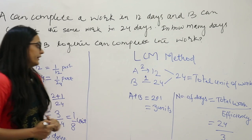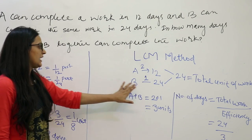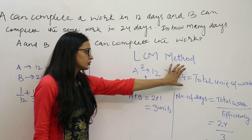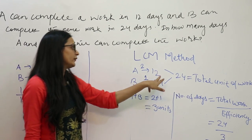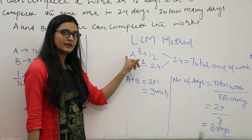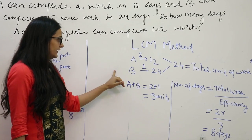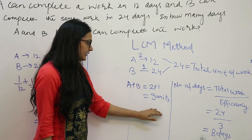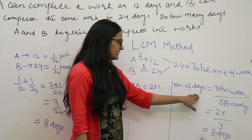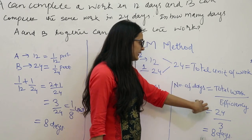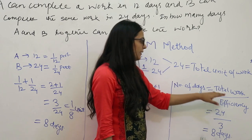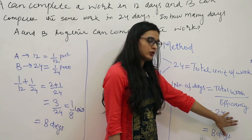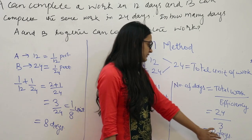I repeat the question. A किसी काम को 12 दिन में करता है, B उसी काम को 24 दिन में करता है. हमने दोनों का LCM लिया जो हमारा total unit of work को denote कर रहा है. अब हमने 24 को 12 से divide किया, हमें A का एक दिन का काम और efficiency मिल गई. ऐसे ही B के लिए किया. दोनों की efficiency को add किया. Number of days निकालने के लिए total work को efficiency से divide किया. यहाँ total work 24 है, A और B की efficiency 3 units है. हमने 24 को 3 से divide किया — we get 8 days. This is our answer.